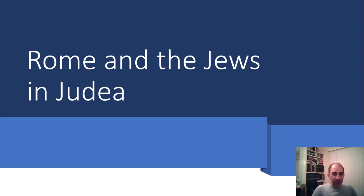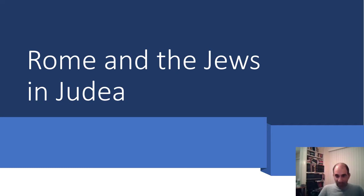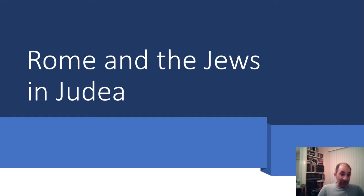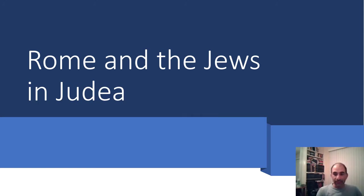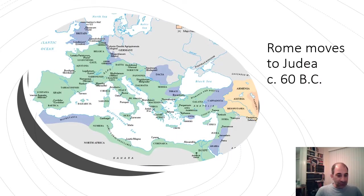We're going to continue on with our last lecture on the antiquity period in the Middle East, specifically the topic of what happens when the Roman civilization enters the Middle East. Starting with a map, we can get a sense of where the Roman civilization is going to reach into.